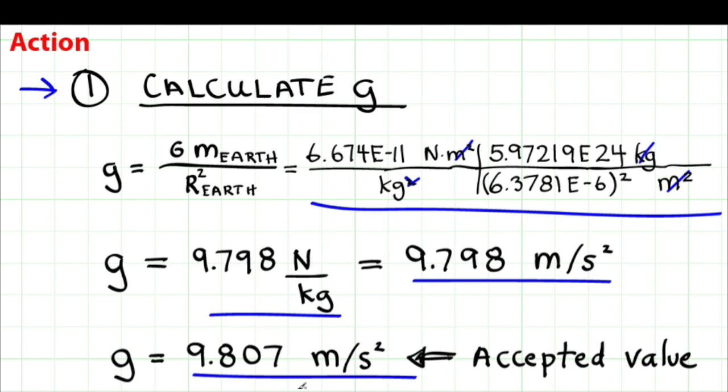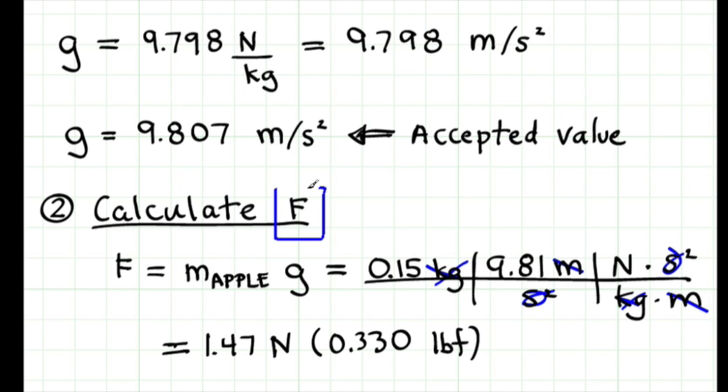And the accepted value of this number, if I use more accurate values of the mass of the Earth, the radius of the Earth, etc., is 9.807 meters per second squared. So now I can calculate the gravitational force between the Earth and an apple. Here's the equation I'm going to use. I substitute in numbers, and the answer is 1.47 newtons, which is about one third of a pound force.